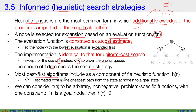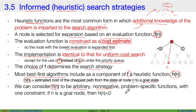All best-first search algorithms include as a component of f a heuristic function, usually represented as h(n). This heuristic function h(n) is the estimated cost of the cheapest path from the state at node n to a goal state. It is problem-specific, usually non-negative, and can be arbitrary — it doesn't necessarily range between 0 and 1. One key constraint is that the heuristic function must equal 0 when the goal node is supplied as input, i.e., if n is a goal node, h(n) = 0.